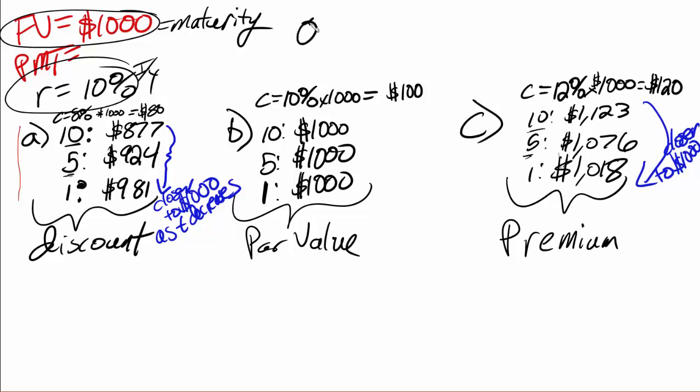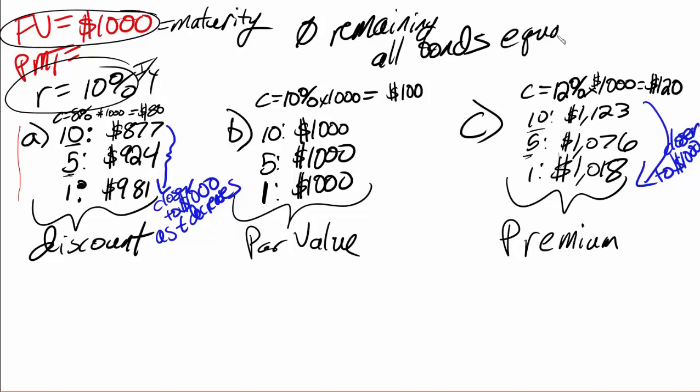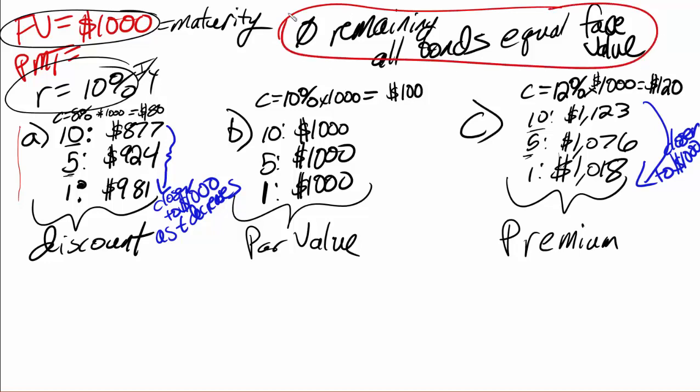When there is zero time remaining at maturity, it doesn't matter what the coupon rate is — every single bond equals face value at maturity. To summarize: a discount bond gains value and converges up to face value; a premium bond loses value and converges down to face value; and a par value bond simply stays where it is throughout its life.